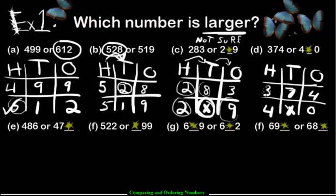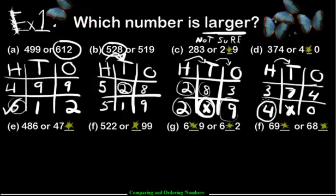How about the next one? We have 374 and 4-star-0. The rule says most hundreds is the bigger number. Let's check the hundreds — this one has 4. So it's automatically the winner. Why don't we check the tens? Well, we don't have to because we have a winner already in the hundreds. So 4-star-0, whatever that number is, 400-something is automatically the bigger number.